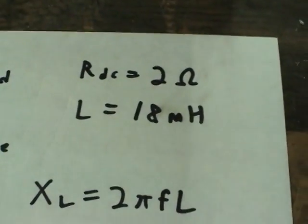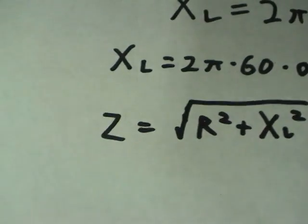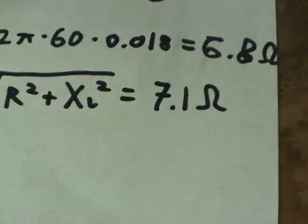And if we combine the two to get the total impedance, they add at right angles. So we compute that and get 7.1 ohms reactance to 60 hertz AC.